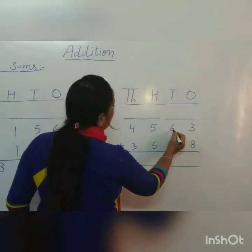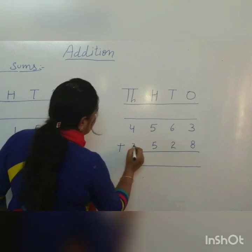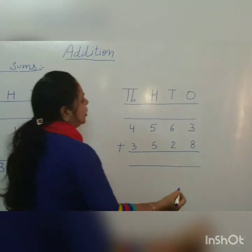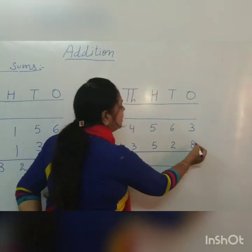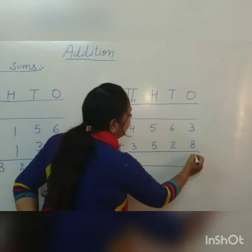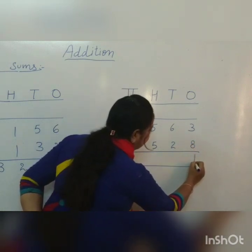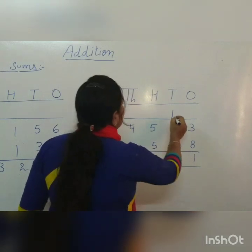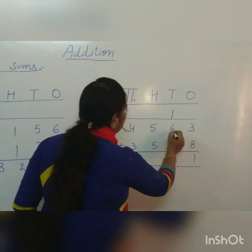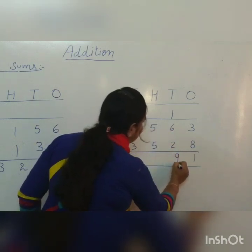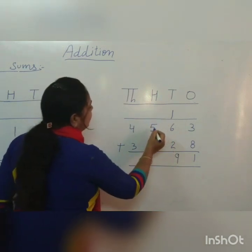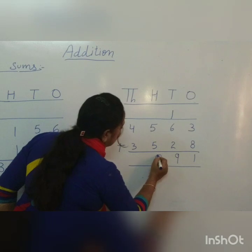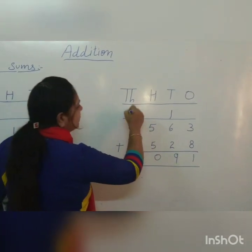The next sum: 4 thousands, 5 hundreds, 6 tens, 3 ones plus 3 thousands, 5 hundreds, 2 tens, 8 ones. We start from the ones place. 8 is the big number. 8 plus 3 is 11 ones. Write 1 in the ones place and carry forward 1 to the tens place. Now come to the tens place. 1 carry plus 6 tens equals 7 tens, plus 2 tens equals 9 tens. Now come to the hundreds place. 5 hundreds plus 5 hundreds equals 10 hundreds. Write 0 at the hundreds place and carry 1 to the thousands place.